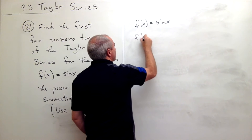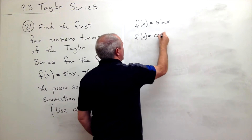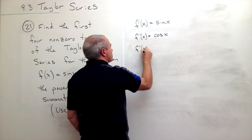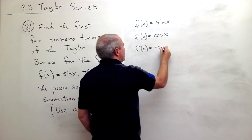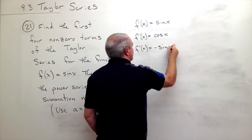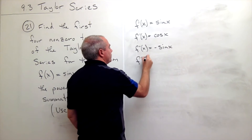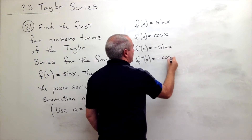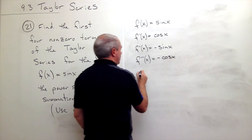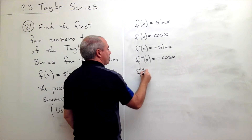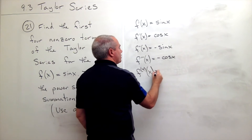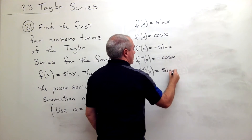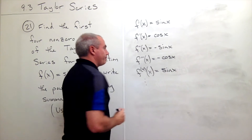So f prime of x is equal to cosine of x, f double prime of x is equal to negative sine of x, f triple prime of x is equal to negative cosine of x, and f quadruple prime of x is equal to sine of x, and the pattern repeats.